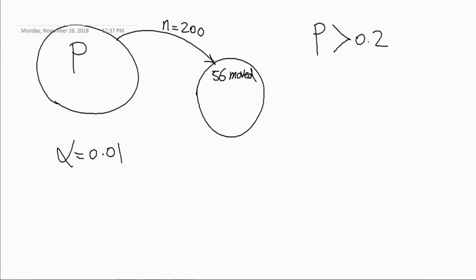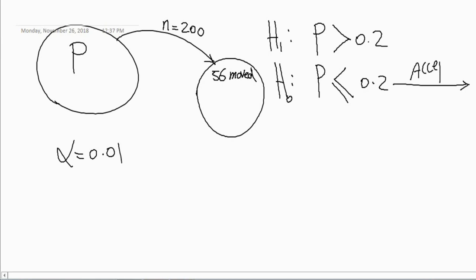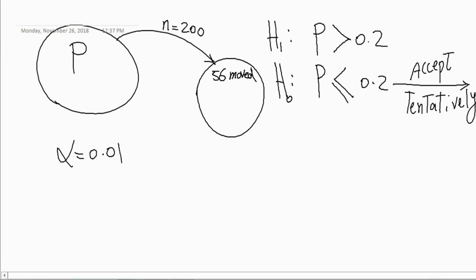They want us to answer this question based on the p-value instead of critical regions. We will follow the same methodology. One claim is that the proportion in the population is more than 0.2. The other claim is that the proportion is less than or equal to 0.2. We consider the one with equality as the null hypothesis, and the other as the alternative hypothesis. We will accept this claim tentatively.